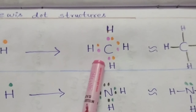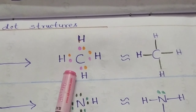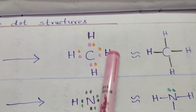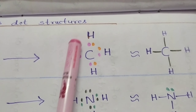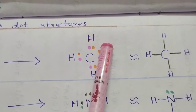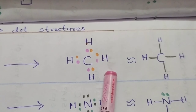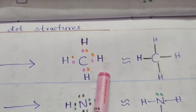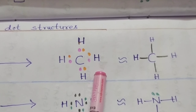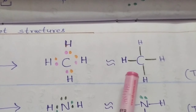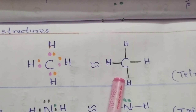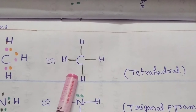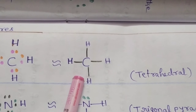In the methane molecule, the central carbon atom contains eight electrons, so the resultant molecule is very stable in nature. This methane molecule has a tetrahedral shape.